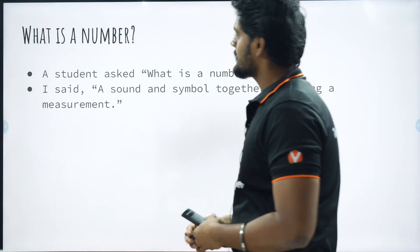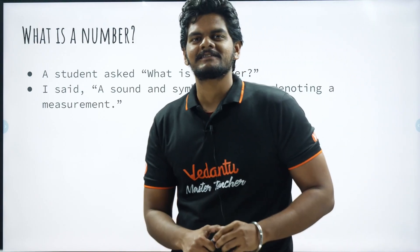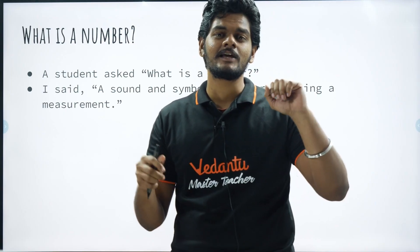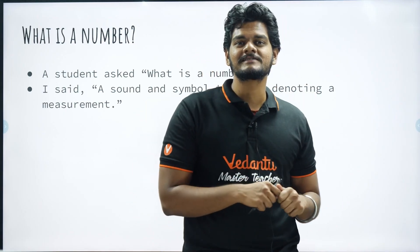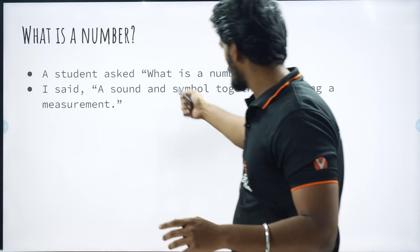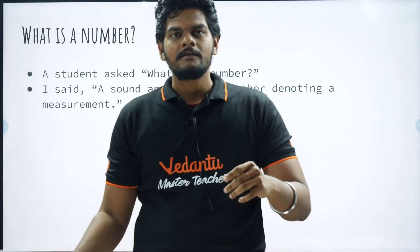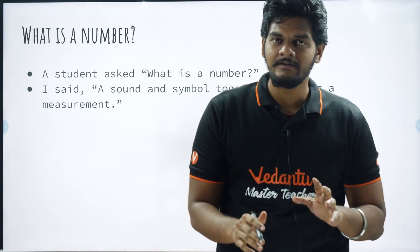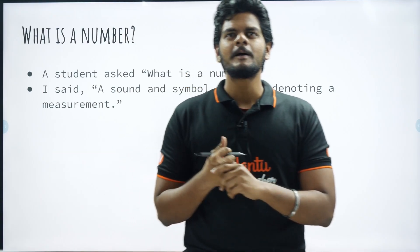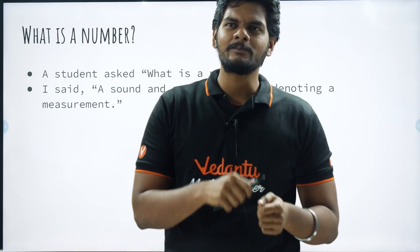Now, what is a number? Recently, a student asked me this. He said that he derived that a number is something which is used for counting. But it's not just counting. I said a number is a sound and a symbol together denoting a measurement. Everything which can be measured can be written in terms of numbers. So a number is nothing but something which humans have developed to be able to measure stuff.